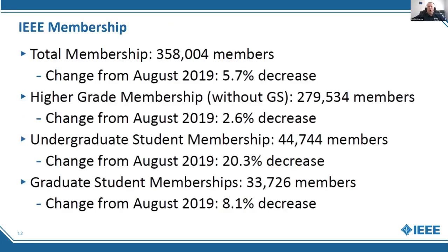IEEE membership overall — this is where we stood at the end of August. Total membership was 358,000 members, which was a 5.7% decrease compared to where we were in 2019.